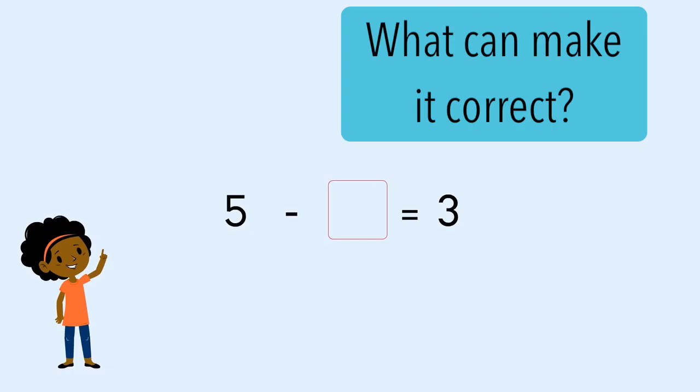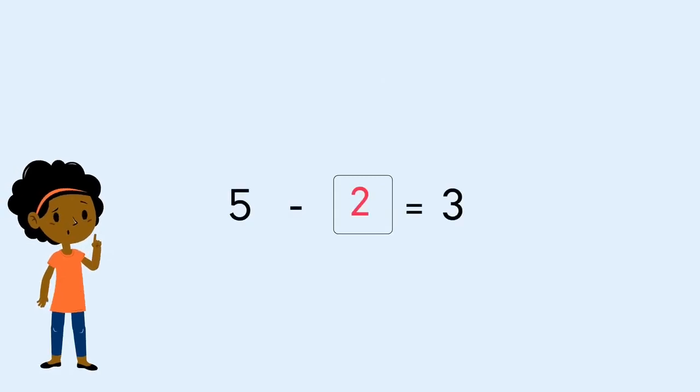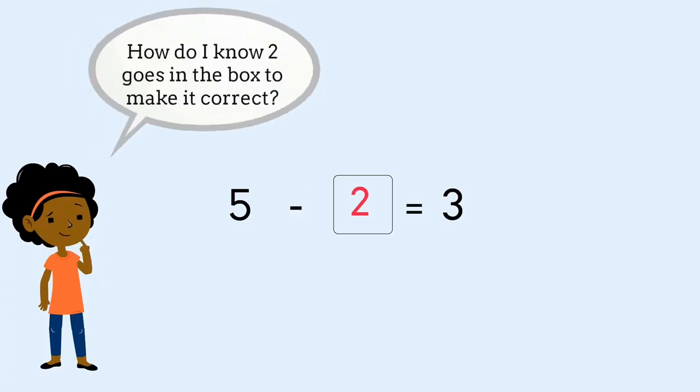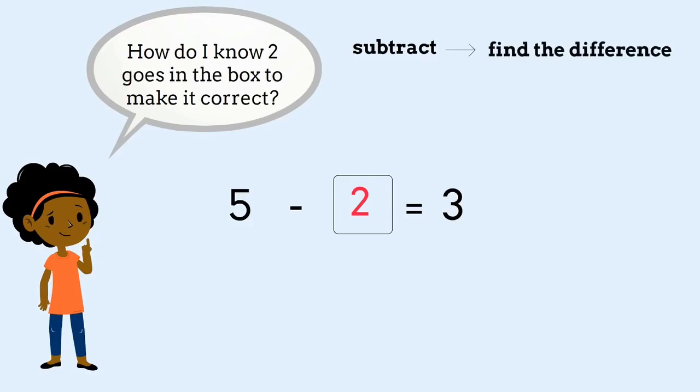What number could we put in the box? Yes, you're right! Two goes in the box to make it correct. But how do I know it's two? We know that subtraction is the same as finding the difference.